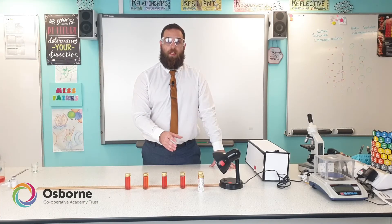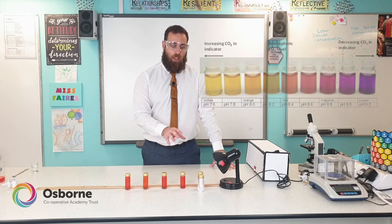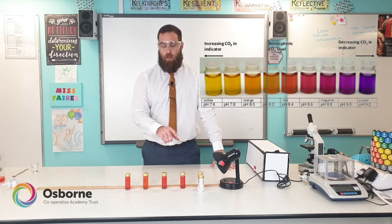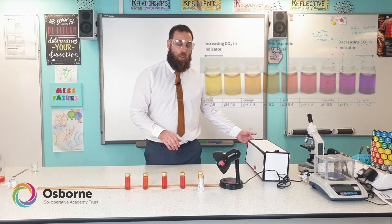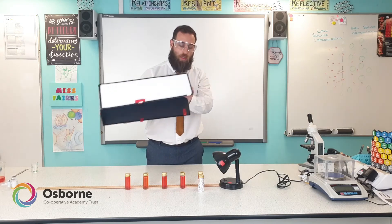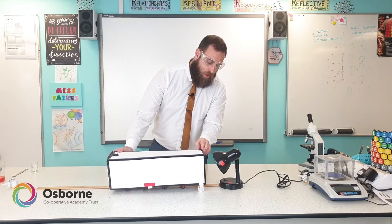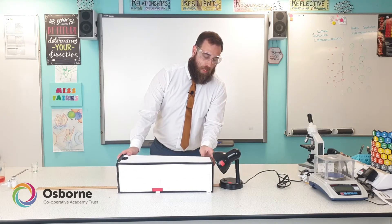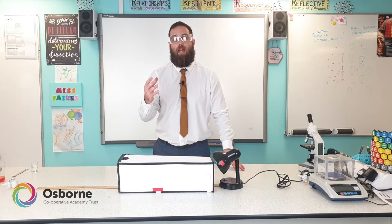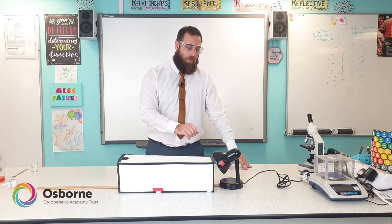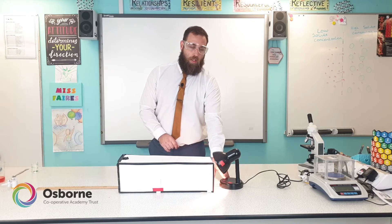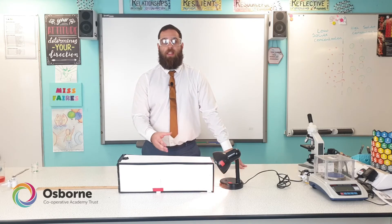Before we finish the method there is one more thing we need to do. We need to measure the pH levels of each of the Bijou bottles at the start and use an indicator range to measure the correct pHs. Once you've done that, place the cardboard box over the top to make sure there's no external light — no classroom lights, no other lights. Then turn the lamp on and leave it for at least 60 minutes so that photosynthesis can take place.